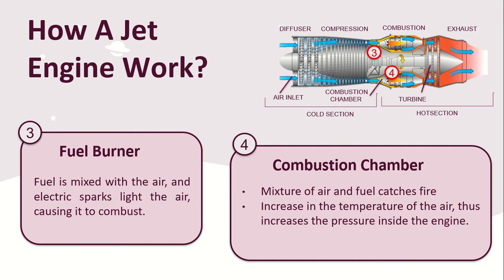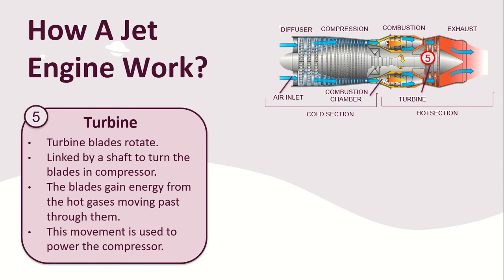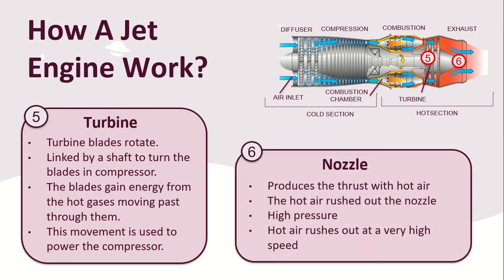The high-energy airflow coming out of the combustor goes into the turbine, causing the turbine blades to rotate. The turbines are linked by a shaft to turn the blades in the compressor and to spin the intake fan at the front. The blades gain high-energy flow from the hot gases moving past them, and that energy is used to drive the fan and the compressor. This turbine takes the power that the burner has created. The nozzle is one of the exhaust ducts of the engine — this is the engine part which actually produces thrust with hot air.